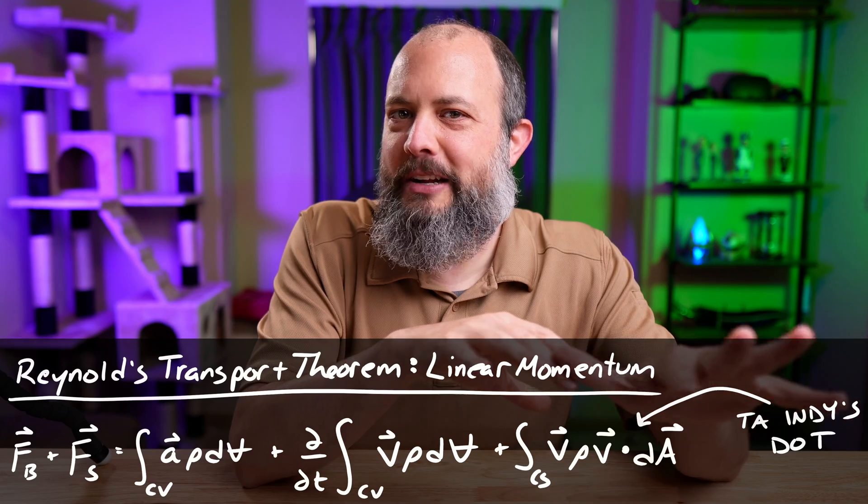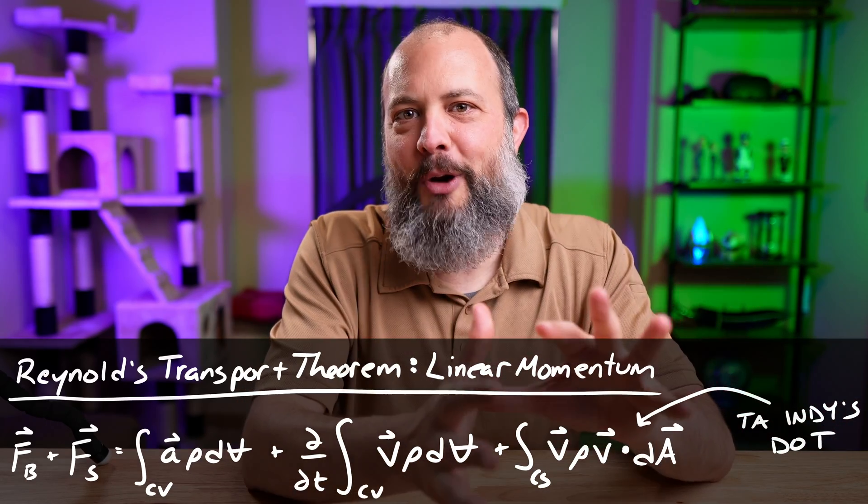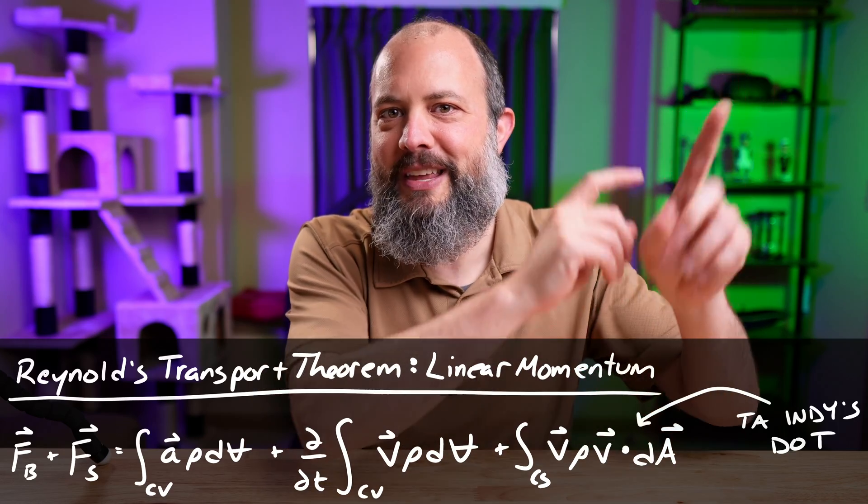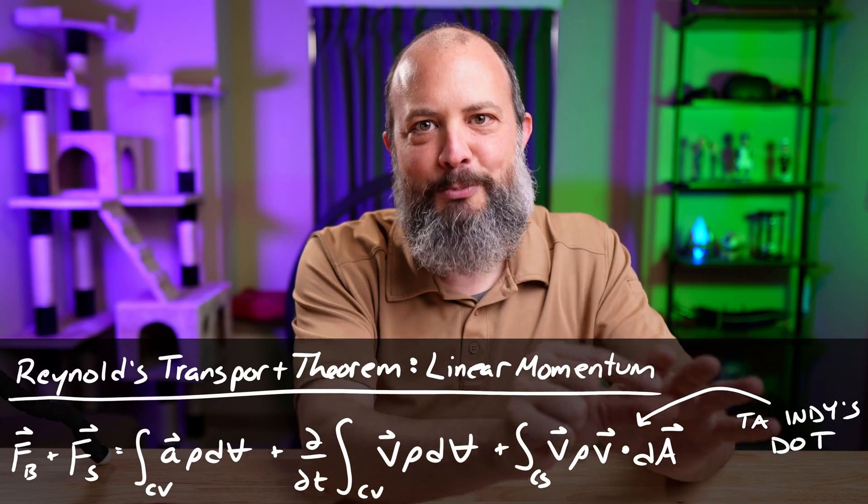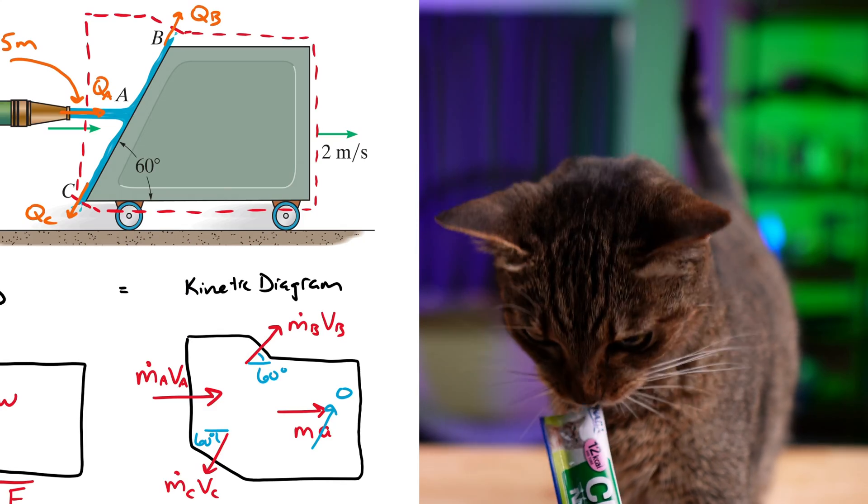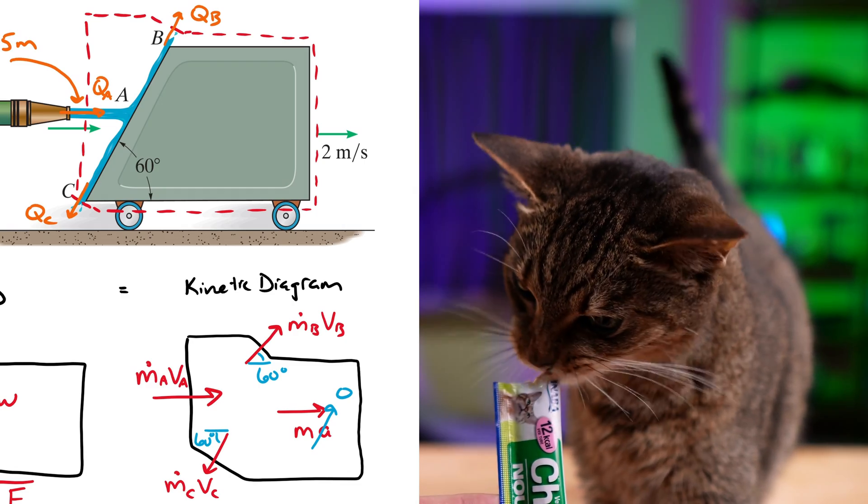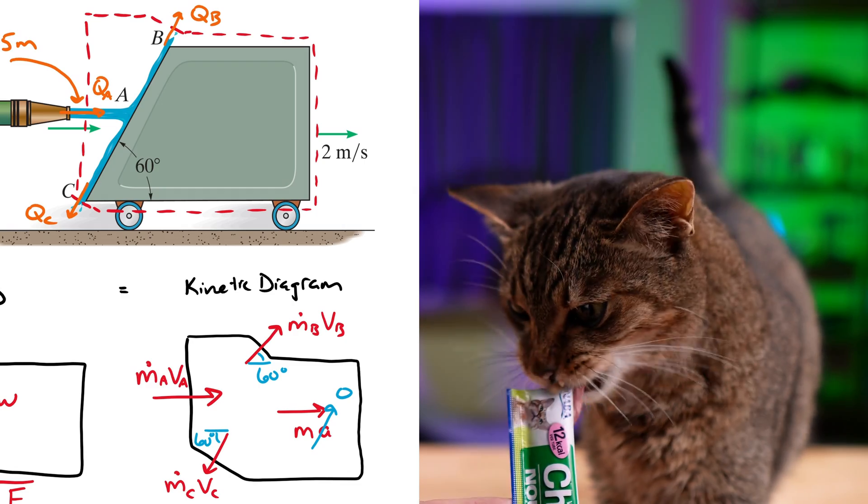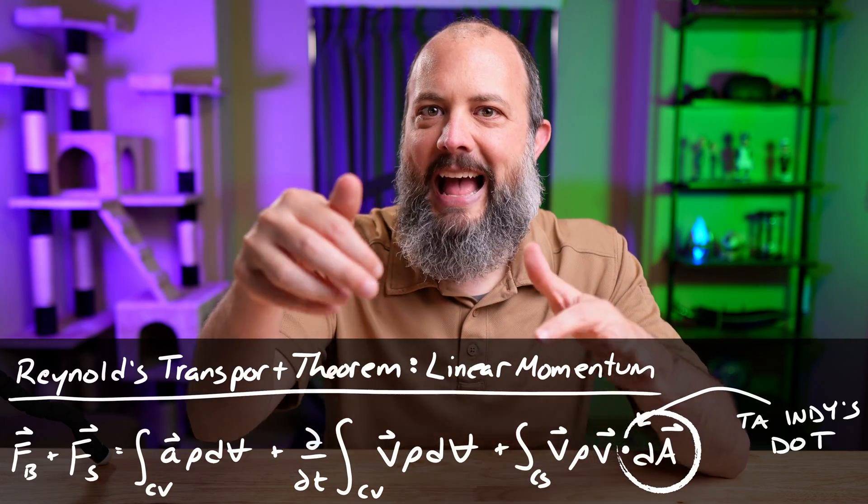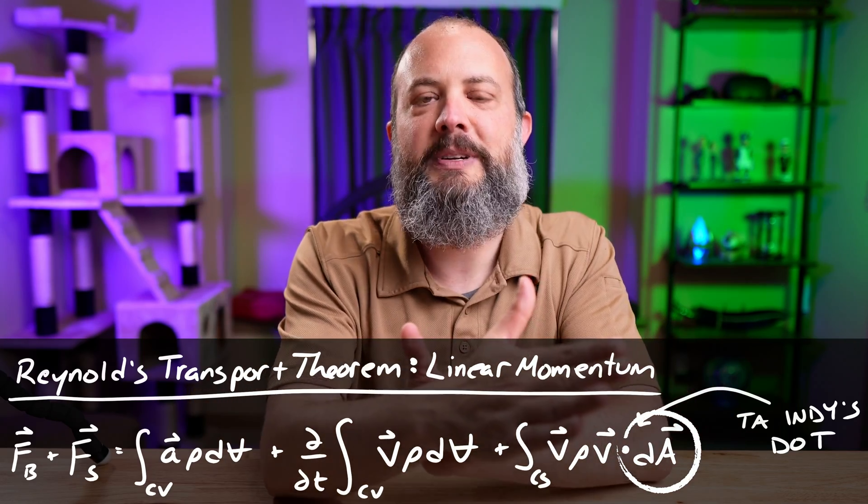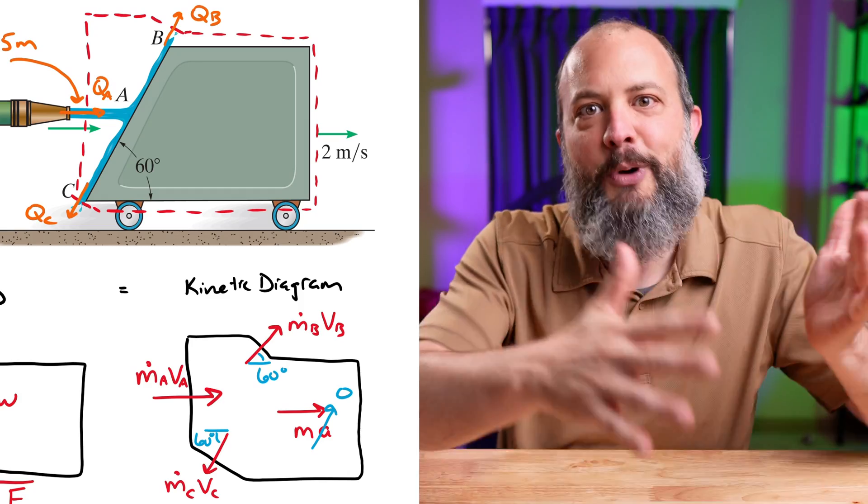Where the dot product is actually kind of important. And if I can convince you one more time, if you haven't already watched my video about a pipe elbow with the momentum with a stationary control volume, I go into a lot more detail there about this dot product. But in short, this is why I said at the beginning of this video that it's vitally important to draw your control volume perpendicular to the direction of flow. It's because of this dot product.